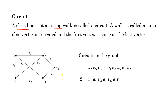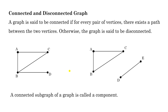Now, connected and disconnected graphs. A graph is said to be connected if for every pair of vertices there exists a path between the two vertices; otherwise it is disconnected. In this graph, for every pair of vertices there exists a path — for example, between c and d there is no direct edge but there is a path c, b, d. Between a and d, the path is a, c, b, d. So this graph is connected.